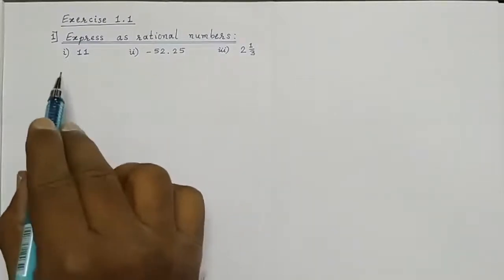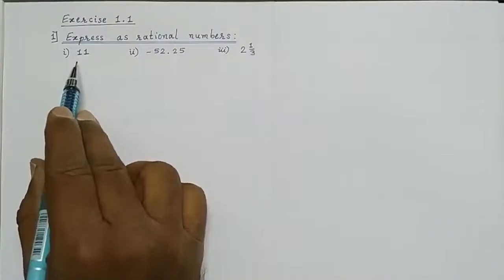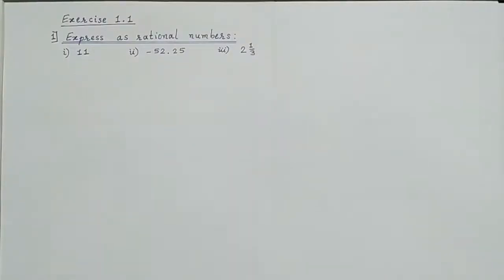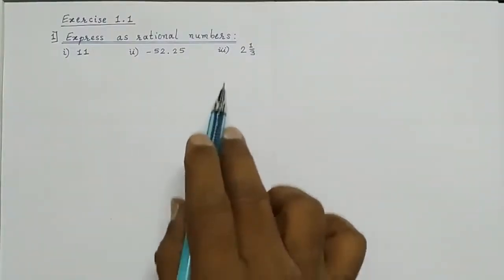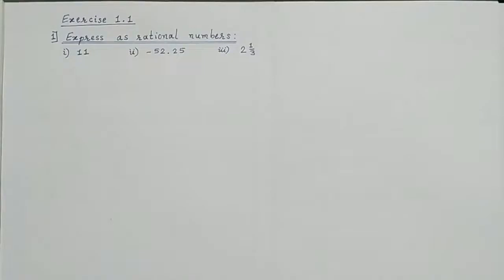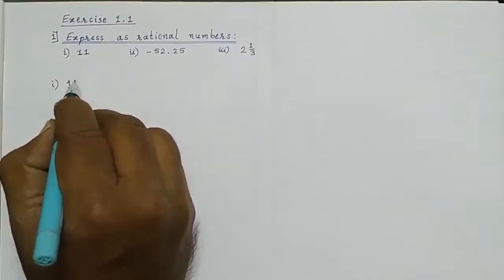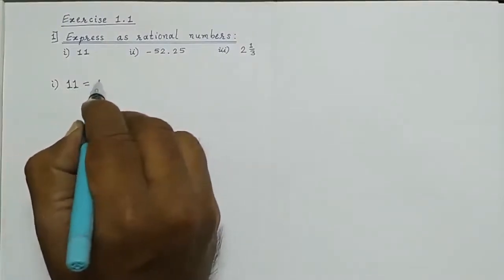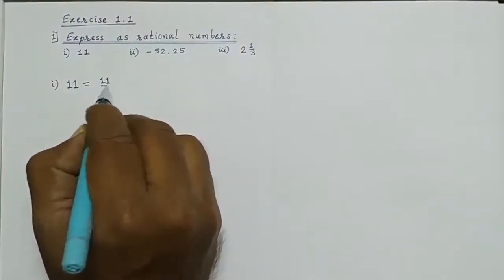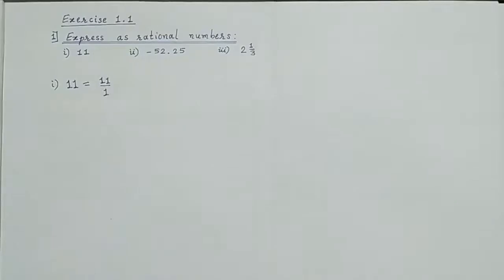Express as rational numbers. The first sum given is 11, the second sum is minus 52.25, and the third sum is 2 and 1/3 (mixed number). Since a rational number is in integer upon integer form, the first answer is 11 upon 1, which is integer upon integer.